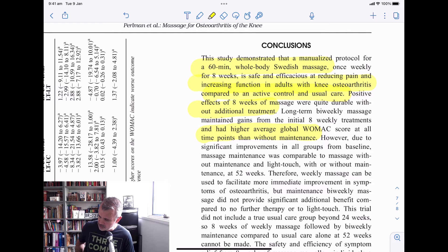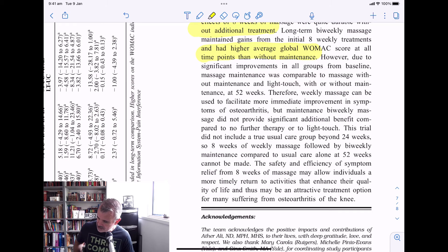Long-term biweekly massage maintained gains from the initial eight weekly treatments and had higher average global WOMAC scores at all time points than without maintenance. However, due to significant improvements in all groups from baseline, massage maintenance was comparable to massage without maintenance and light touch, with or without maintenance at 52 weeks. So all groups actually improved over the 52-week time, but in the first eight weeks, massage once a week was much better. Therefore, weekly massage can be used to facilitate more immediate improvements in symptoms of osteoarthritis, but maintenance biweekly massage do not provide significant additional benefits compared to no further therapy or light touch. So if you're having massage after the initial eight weeks, it's no real different having it once every fortnight for, again, 52 weeks compared to usual care or light touch. But in saying that, all those groups did improve their scores over that 52-week period.